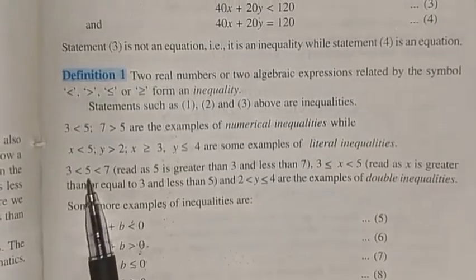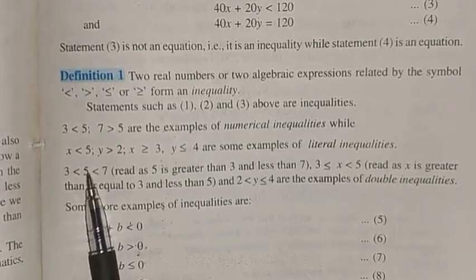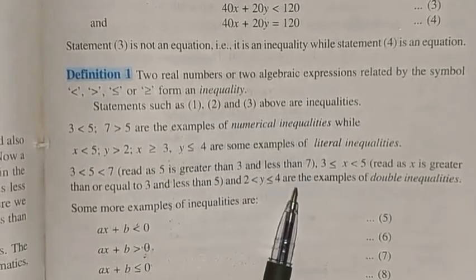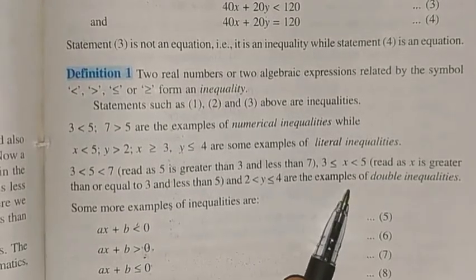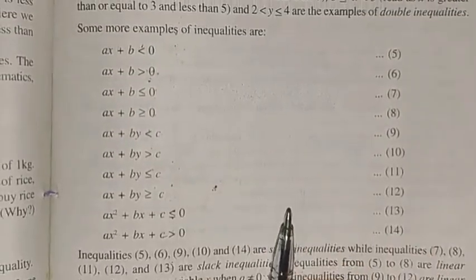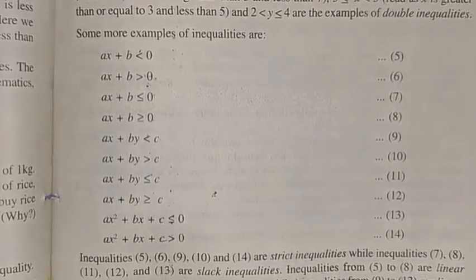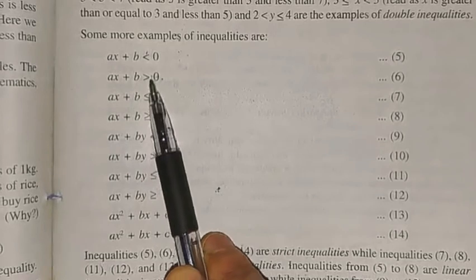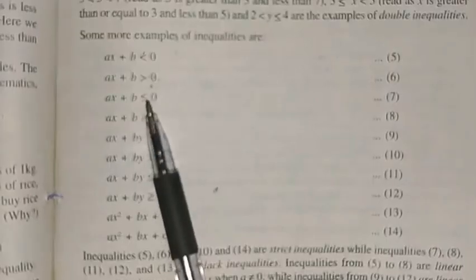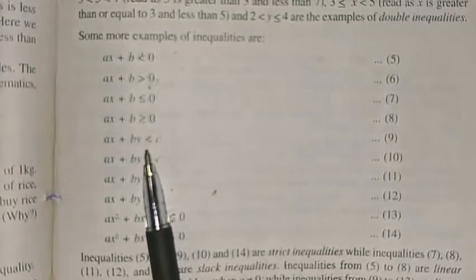An inequality expressing a relationship between three numbers — such as 'five is greater than three and less than seven' — is an example of a double inequality. Inequalities with the strict signs greater than or less than are called strict inequalities. Inequalities with less than equal to or greater than equal to are called non-strict inequalities.